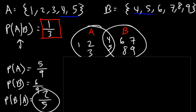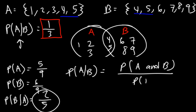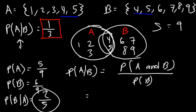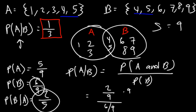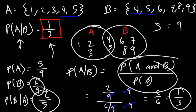Now let's confirm that using conditional probability directly. P(A|B) is the probability that event A and B occur over the probability that B will occur. The sample space has 9 numbers, and the intersection of A and B is 2 numbers — 4 and 5. So the probability that A and B occur is 2 out of 9, divided by 6 over 9, giving us 2 over 6, which reduces to 1 over 3. Now you can see how Bayes' Theorem works with the formula.